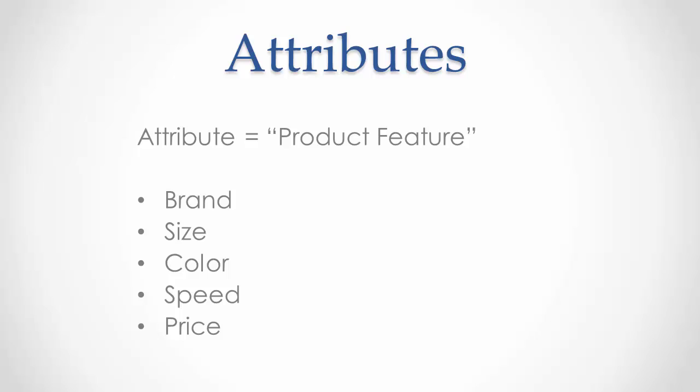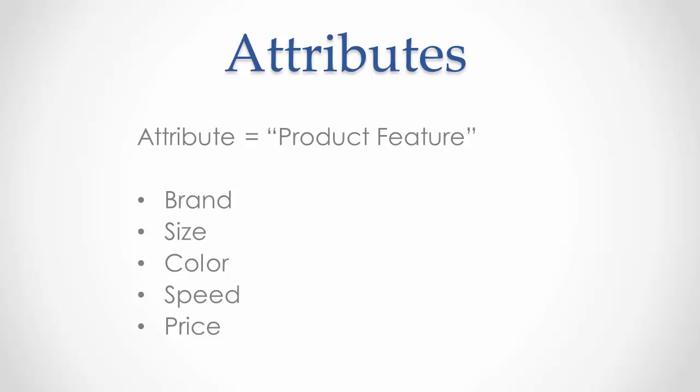size, color, advertising claims, speed, or price. Every conjoint analysis study involves at least two attributes, and each attribute needs to be described using at least two levels.